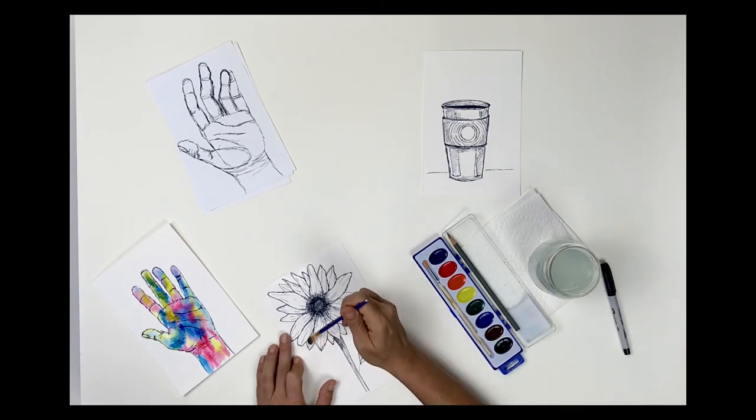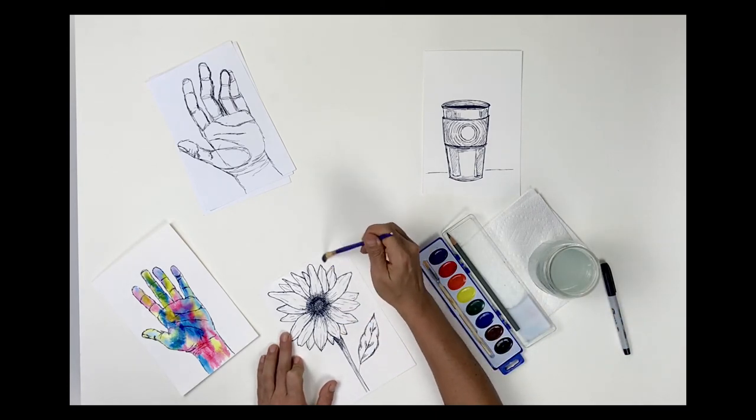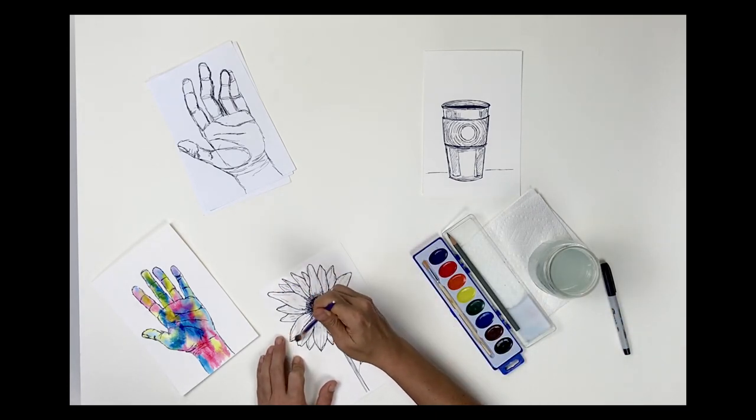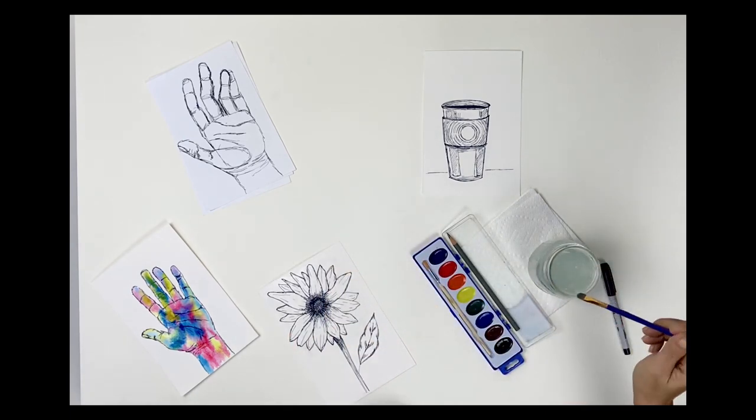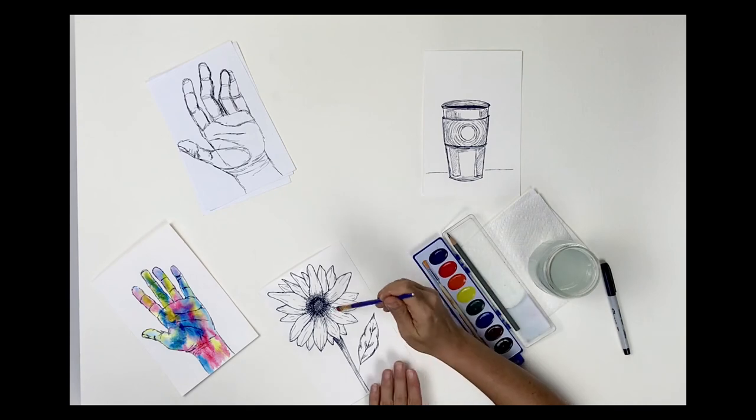Now, when I do wet on wet, adding color, the colors will bleed beyond the edges of the flower. I'm going to stick with warm colors for this one.